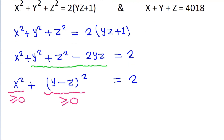The only possible way to write 2 as a sum of two perfect squares is x² = 1 and (y - z)² = 1, because 0 + 2 is not possible since 2 is not a perfect square.